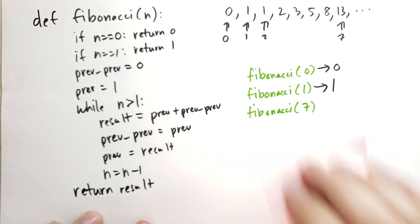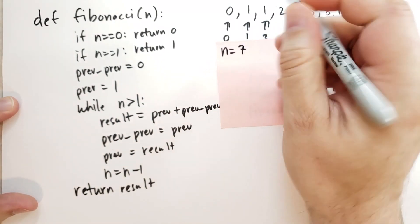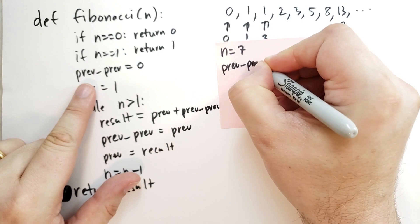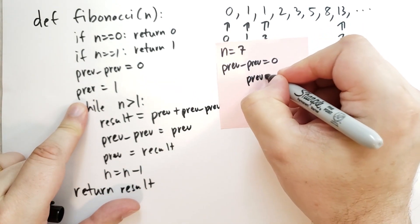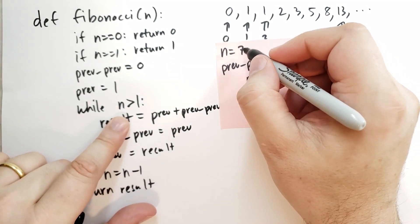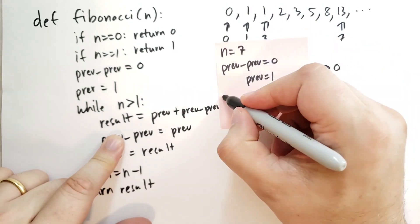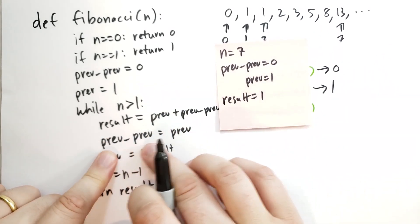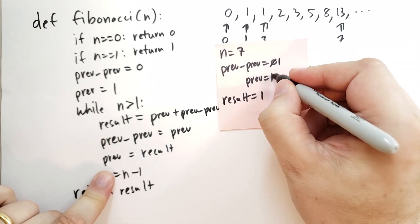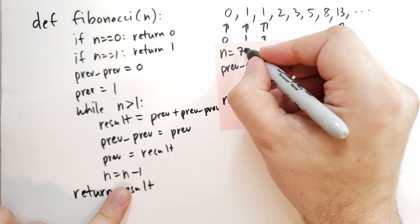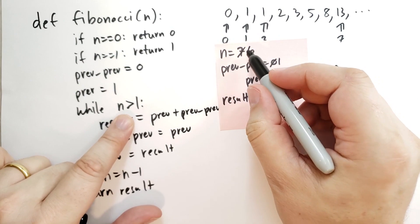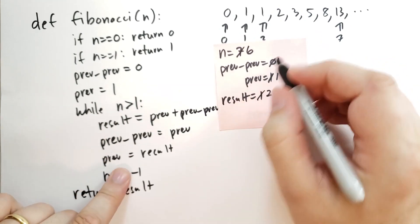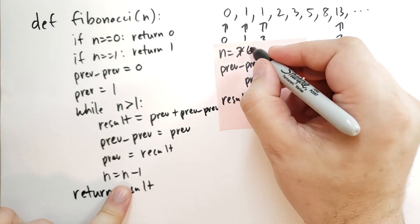For n equals 7: is n equal to 0? No. Is n equal to 1? No. So prev_prev equals 0, prev equals 1. While n is greater than 1 — 7 is greater than 1 — result equals prev + prev_prev = 0 + 1 = 1. prev_prev becomes 1, prev becomes 1, n decrements to 6. Condition holds: result = 1 + 1 = 2. prev_prev becomes 1, prev becomes 2, n decrements to 5. Condition holds: result = 1 + 2 = 3. prev_prev becomes 2, prev becomes 3, n decrements to 4.